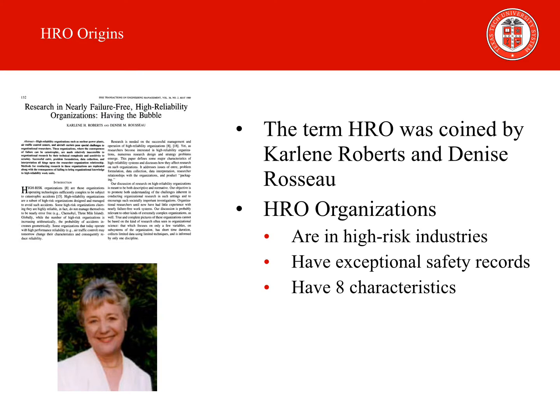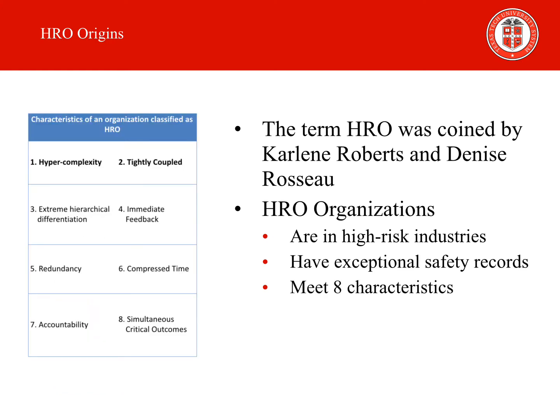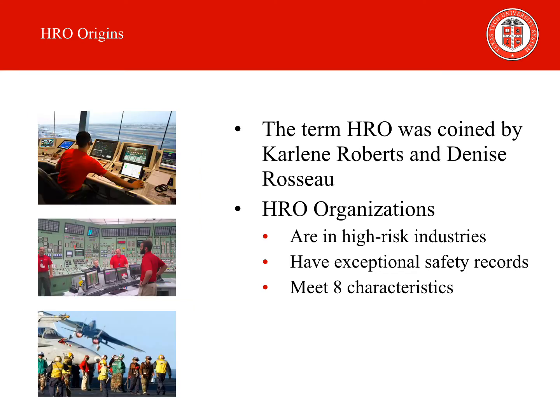First things first, where did the term High Reliability Organization and HRO come from? The answer is a paper that was published in 1989 by Carlene Roberts and Denise Rousseau. They defined a high-reliability organization as one that was working in a high-risk industry and had an exceptional safety record. Examples of organizations classified as HRO include air traffic control, nuclear power, and aircraft carriers.